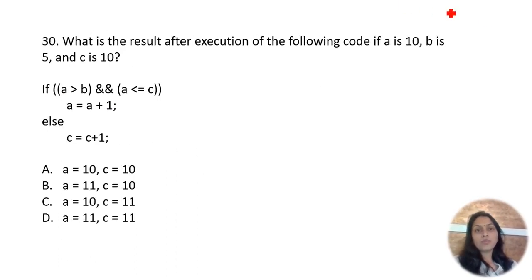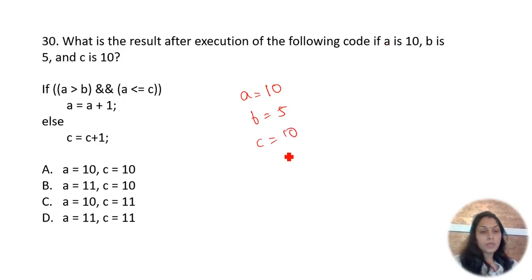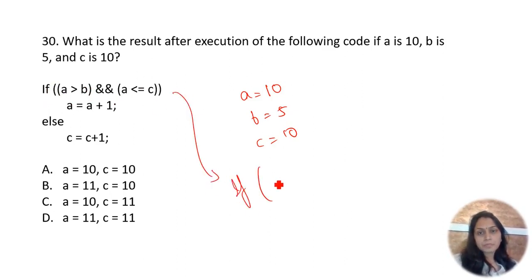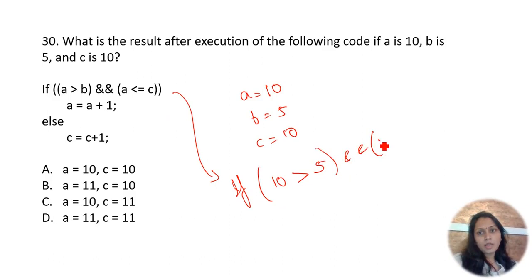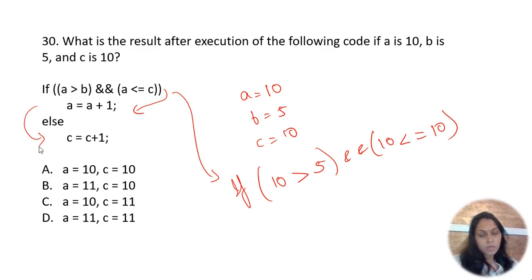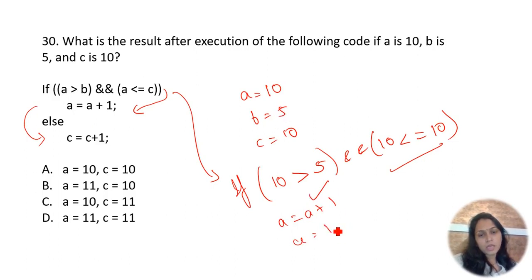What is the result if a=10, b=5, c=10? The condition: a(10) > b(5) AND a(10) <= c(10) — both are true, so the controller goes to a = a+1 = 11. So a is 11 and that is printed.